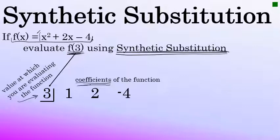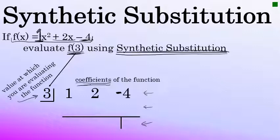In the case of f of x, the coefficient on x squared, although not written in the original problem, is understood to be a 1. The coefficient on x to the first is 2, and the constant is negative 4. Be sure to include the negative sign if there is one. The synthetic substitution process will include a total of 3 rows. We've already filled in the first row.